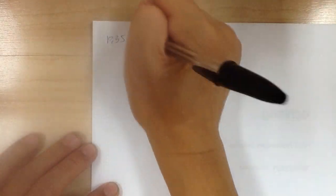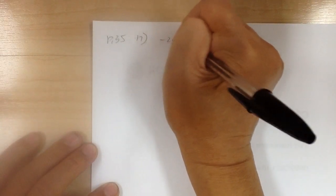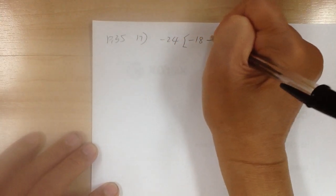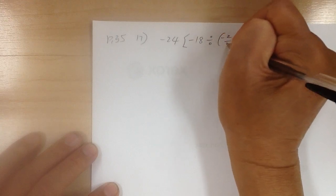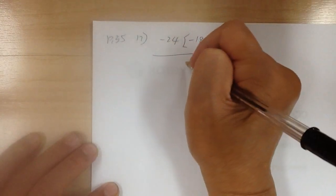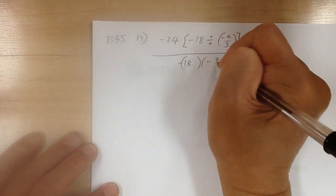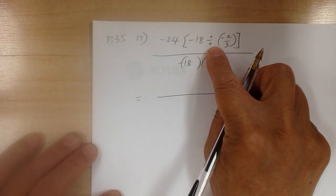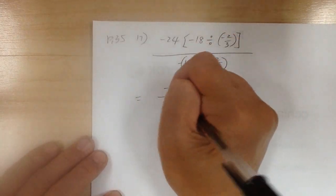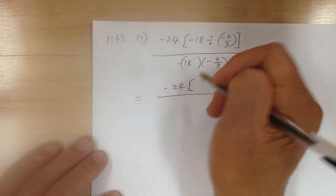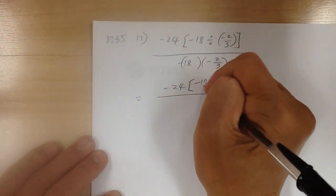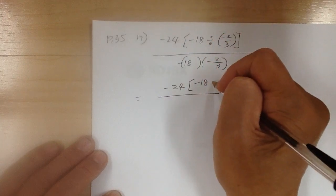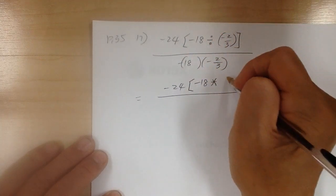Number 17, page 35. There's a division here, so I need to convert that into multiplication before I do anything else. So I have negative 24, keeping everything the same. I have negative 18 — convert division into multiplication, and you have to flip this upside down.